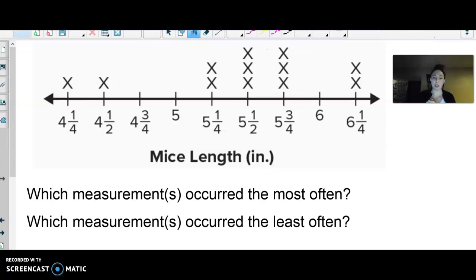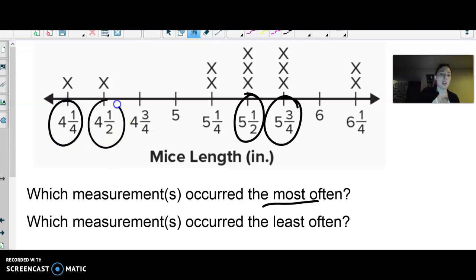Which measurement or measurements occurred the most often and which measurement or measurements occurred the least often, assuming at least one mouse had that length? Hope you got it. The least often, or sorry, most often, there were three mice that were five and a half inches, three mice that were five and three fourth inches. Those were the most. The least, only one mouse was four and a fourth and four and a half. So those were the least often, assuming they had one mouse, right? Like you could say, well, four and three fourths, five and six, there were zero mice, but assuming there was at least one.